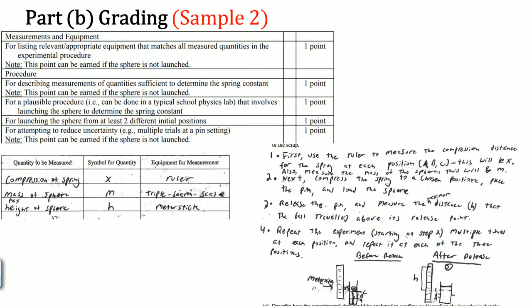Let's look at sample two. They list a ruler for spring compression, a triple beam balance for the sphere mass, and a meter stick for the height. That looks correct for equipment. The procedure steps look sufficient and possible — each step is described and repeated for each position, and they even include a diagram, confirming the experiment is reproducible.